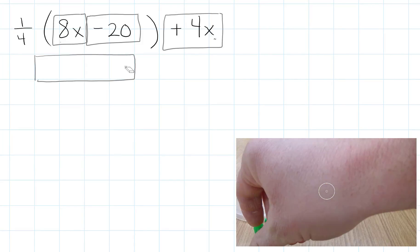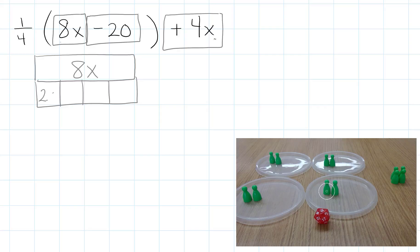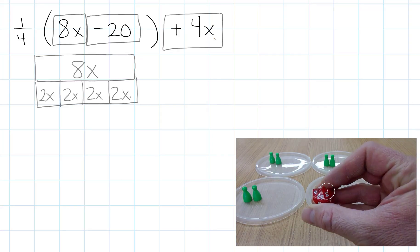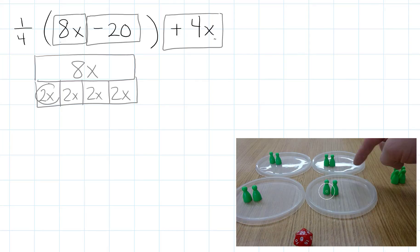So what I'm going to do, if I take 8x's, I'm going to split them up evenly, and that means there would be 2x's in each box. And what that's representing is that 1 fourth would be equal to just 2x's.